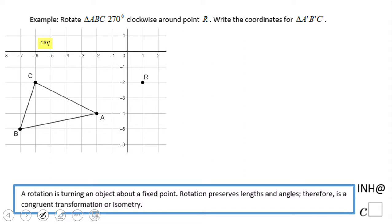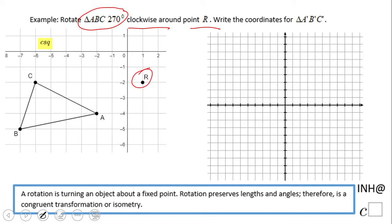Welcome, welcome here on I Need Help at C Square. In this video clip we're going to take a look at how to rotate a triangle 270 degrees clockwise around point R. Some graph paper will be helpful, and plot the point R.